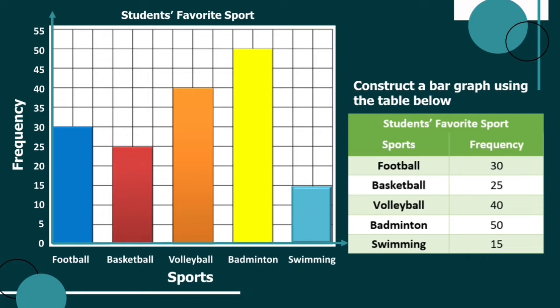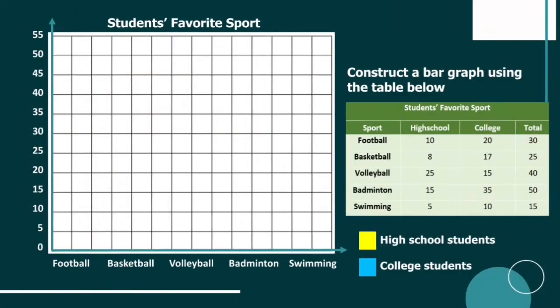That is how to plot a vertical bar graph. Using the previous example, what if we are plotting a double bar graph, wherein we are comparing two sets of data in the same graph? As we can see in our table, we have two more data, and the same goes for each category. To be clear, below the table, I have here a color guide: color yellow for high school, and color blue for college.